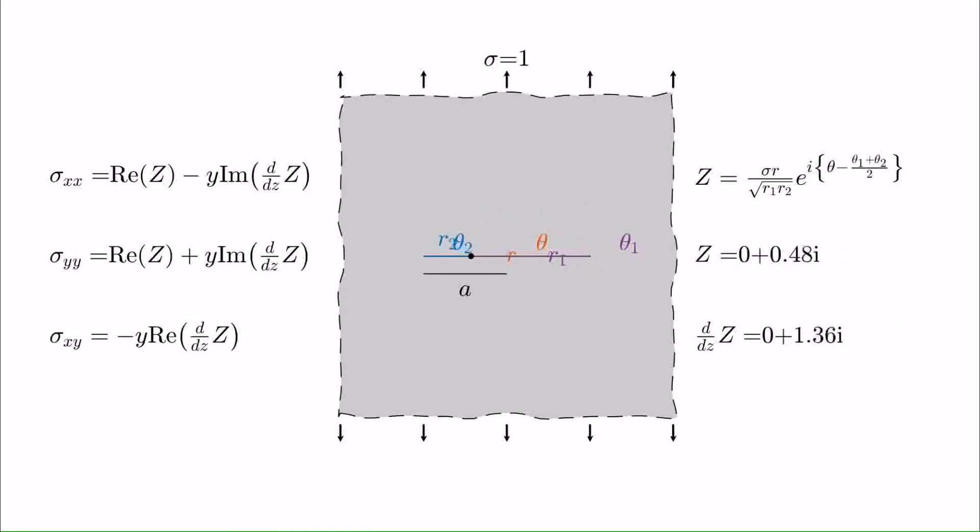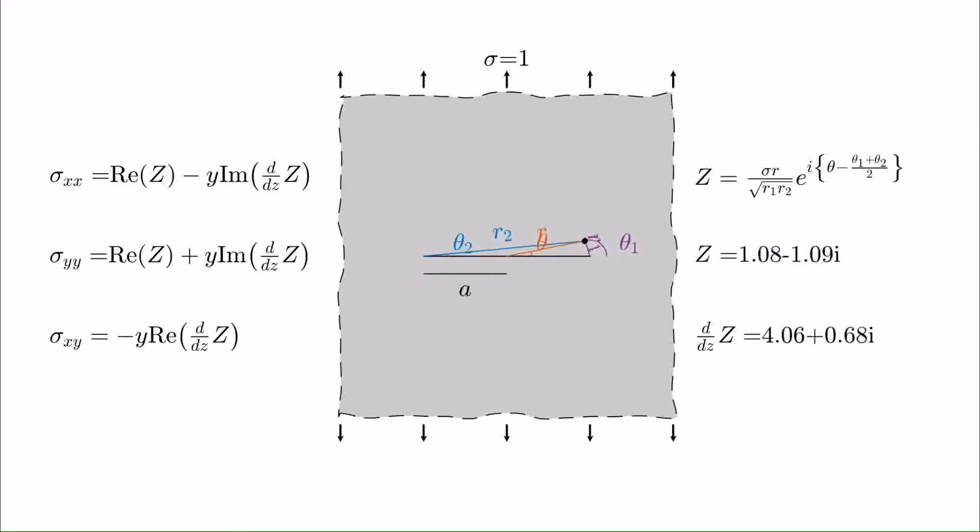I will now show how the stresses at the tip of the crack can be approximated, so we travel over to the right-hand tip of the crack. The derivation I'm about to show was first performed in the seminal work of George R. Irwin in 1957. When evaluating the stresses close to the right-hand tip of the crack, the distance to the left tip is approximately 2a, and to the centre of the crack it is a. So we replace these in the stress function for the respective values of a.